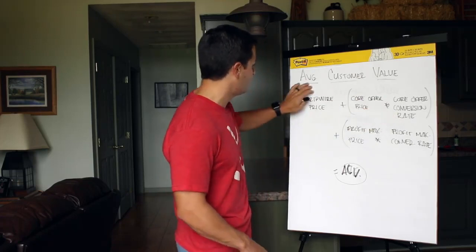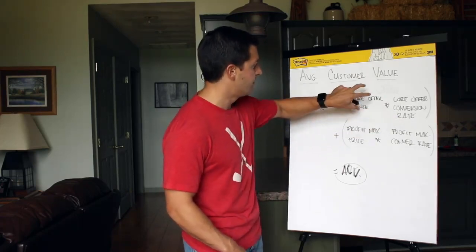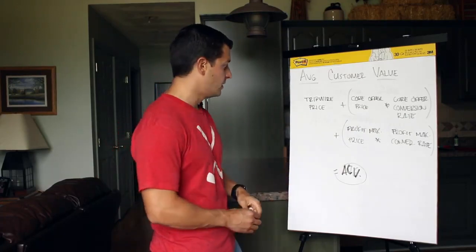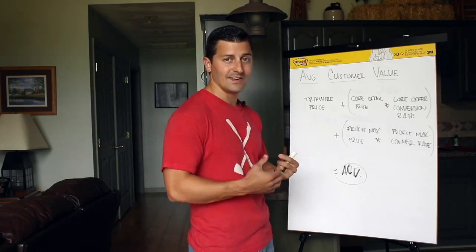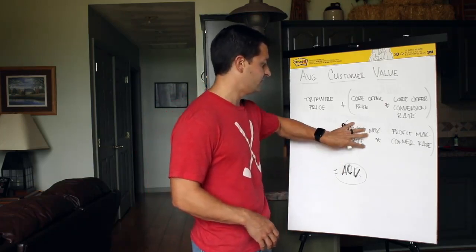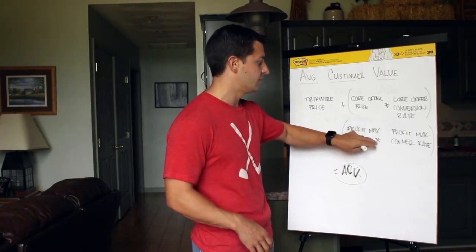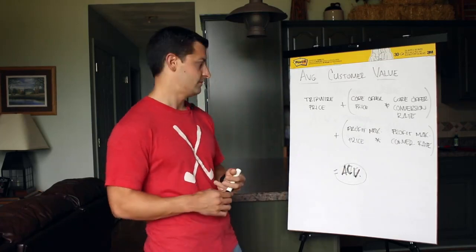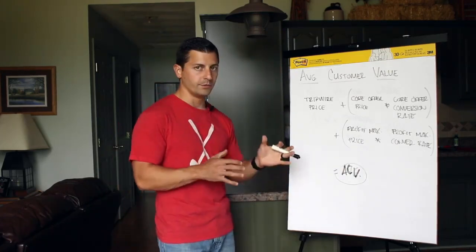How many of those people from the tripwire converted and purchased this next core offer price? And then if you want to go to a third offer, a profit maximizer, that's an even higher ticket item. You take that profit maximizer price, whatever that item might be, and you multiply it by how many people converted and bought that profit maximizer product.